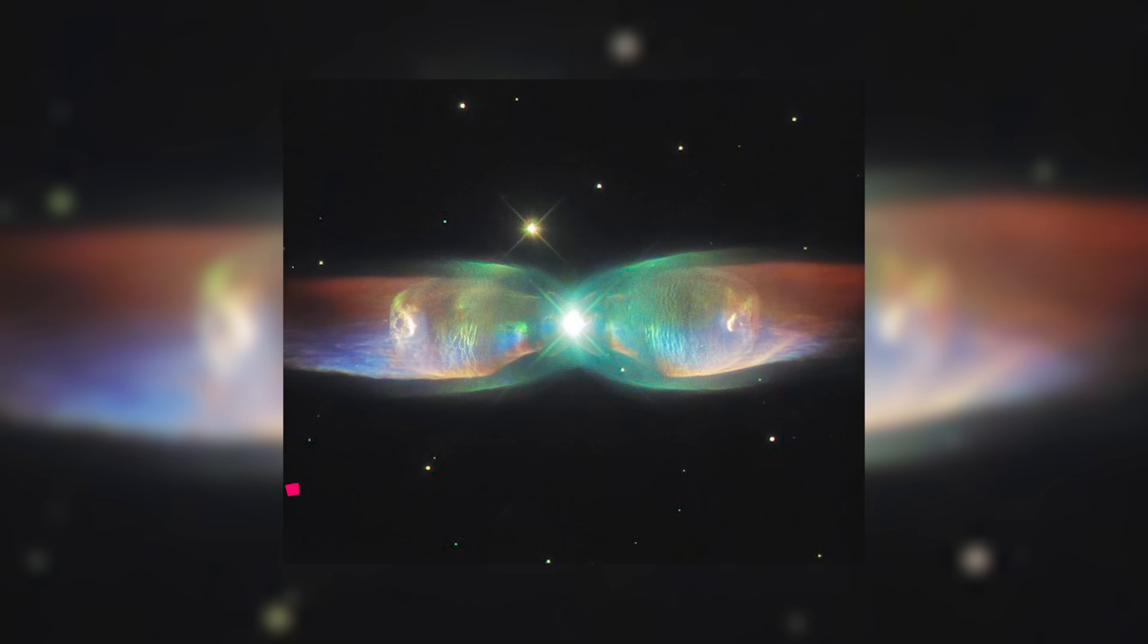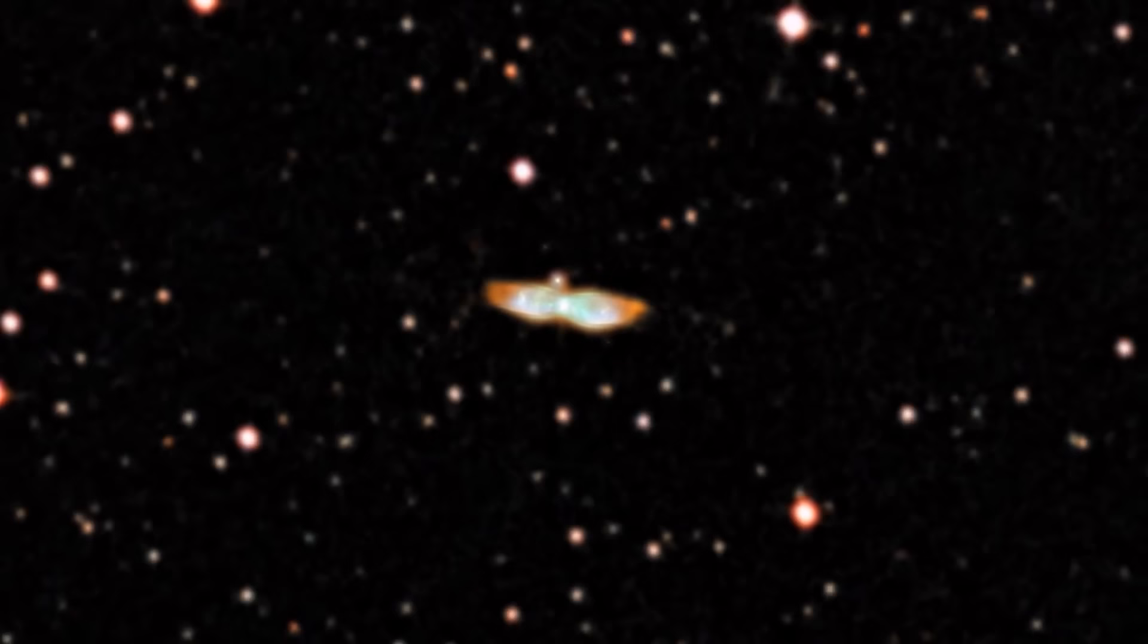Number 10. The Twin Jet Nebula. The Twin Jet Nebula, or PNM29, is a striking example of a bipolar planetary nebula.